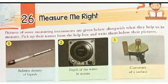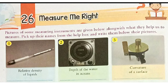Here, pictures of some measuring instruments are given below along with what they help us to measure. Pick up their names from the help box and write them below their picture. So, we have to write the name of these measuring instruments. Our first picture — we use it to measure relative density of liquids. Yes, you are right. It is hydrometer.